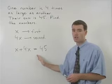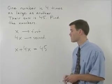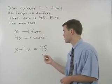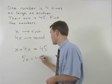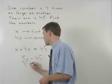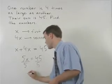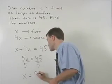Now we have an equation and we can solve for x. We start by simplifying the left side to get 5x equals 45. Divide both sides by 5 and x equals 9.